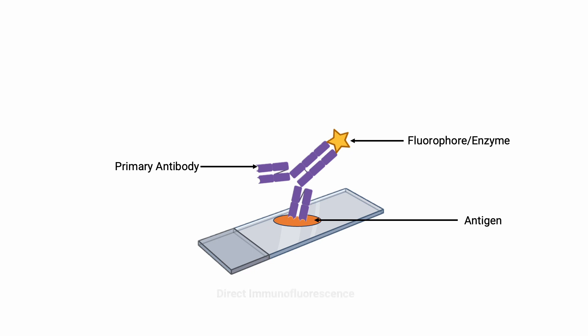Once the primary antibody binds to its specific antigen, the sample can be visualized under a fluorescence microscope. The presence of fluorescence indicates the presence of the antigen in the sample.